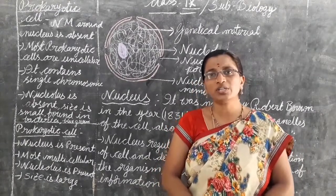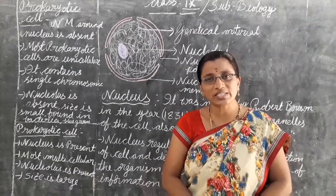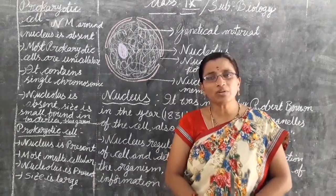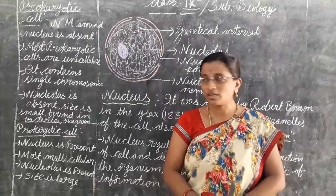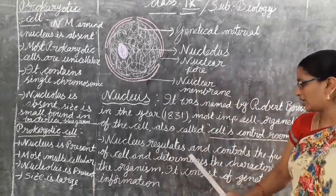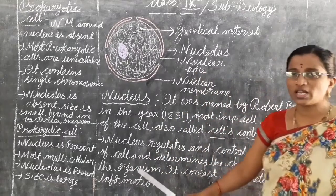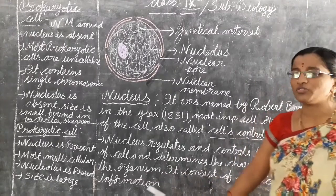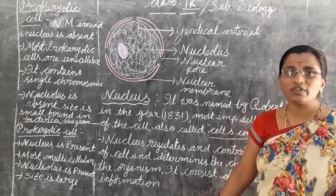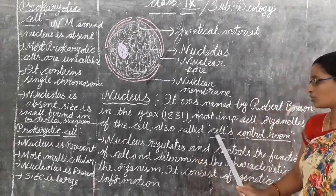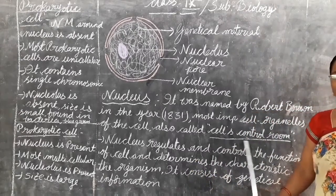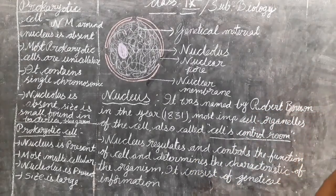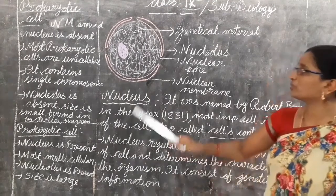Compared to all organelles — mitochondria, Golgi apparatus, endoplasmic reticulum, cytoplasm, cell membrane — the nucleus is the largest and most important cell organelle. It was discovered by Robert Brown in the year 1831. The nucleus regulates and controls the functions of the cell and determines the characteristics of the organism. That is why we call the nucleus the control room of the cell.